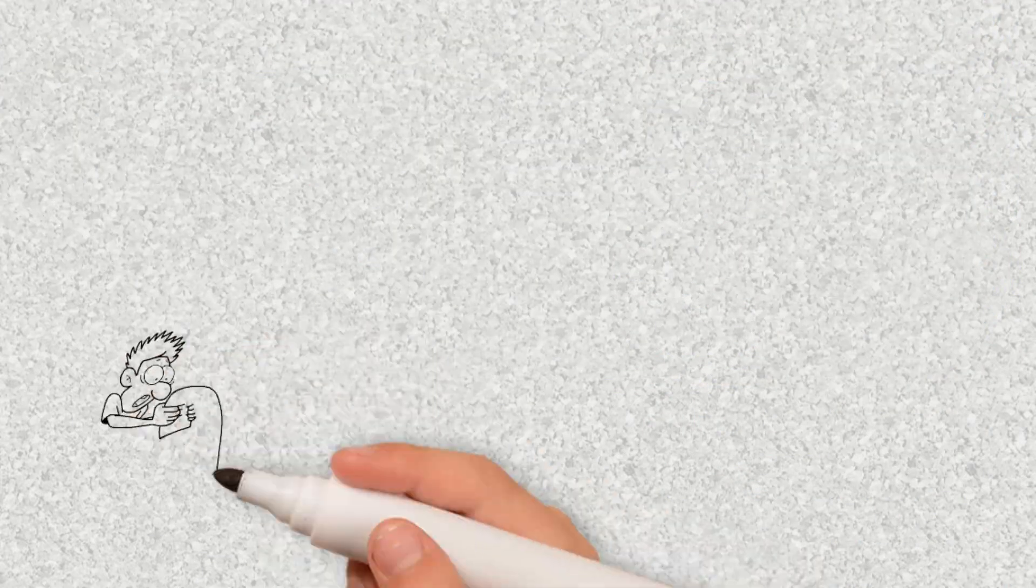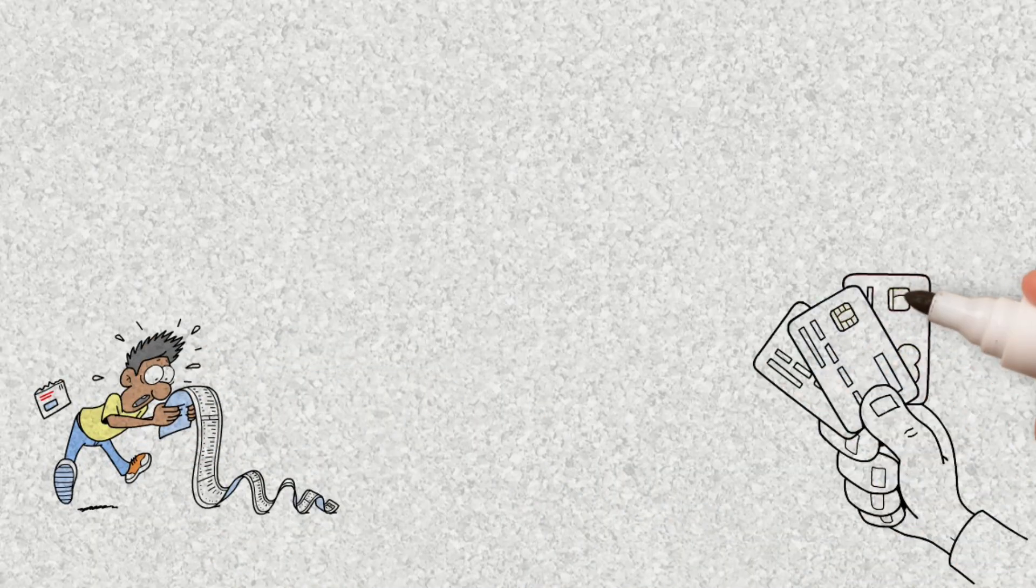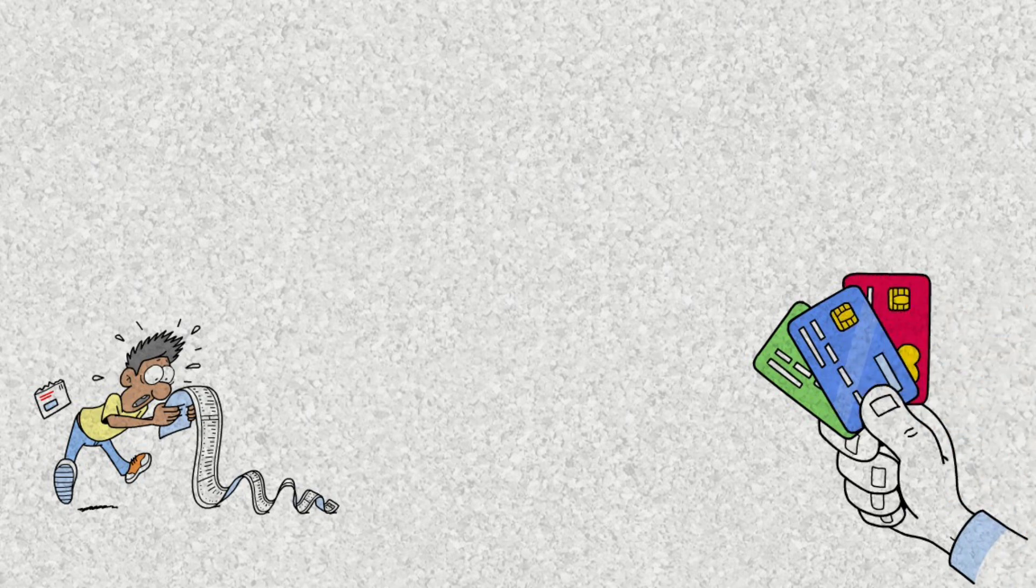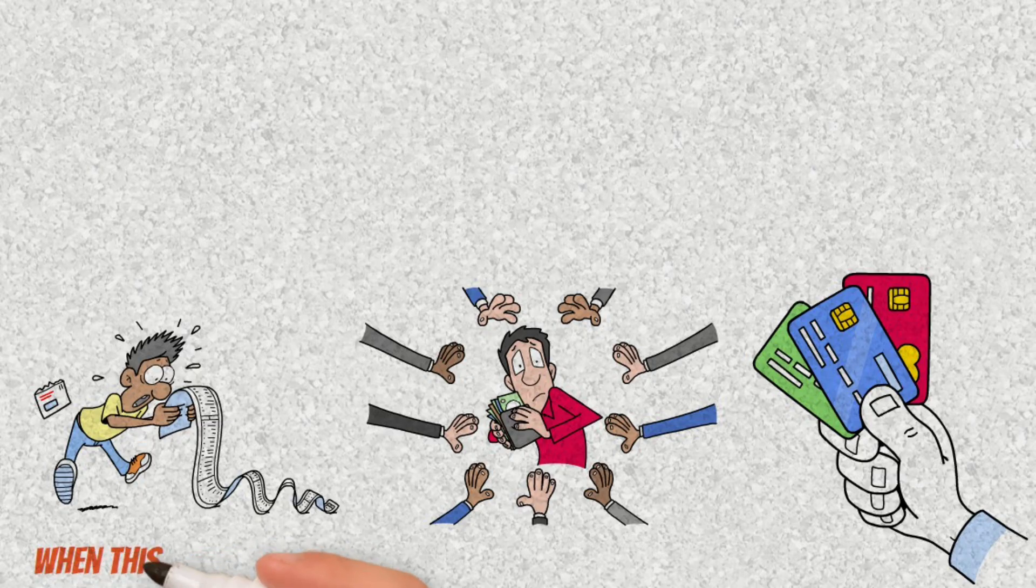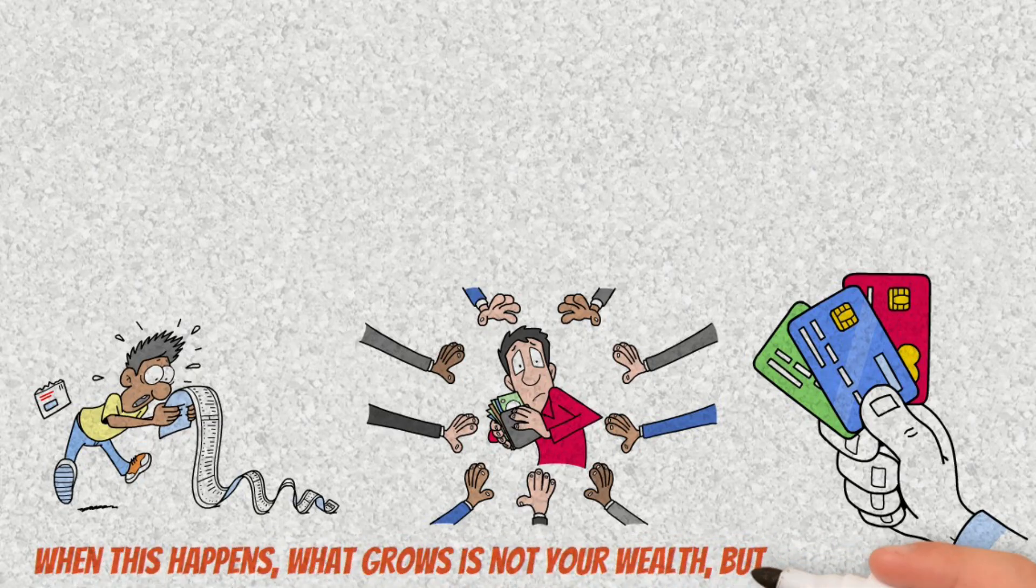The second enemy is expensive debt. High interest rates on credit cards, overdrafts, or loans not only cancel out the gains from your investments, but also reverse the process, making the compound effect work against you. When this happens, what grows is not your wealth, but your debt.